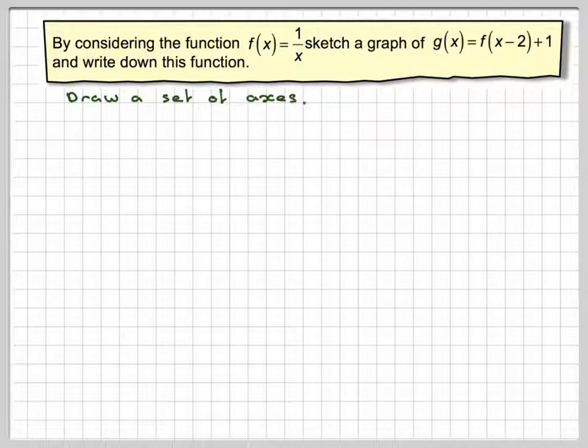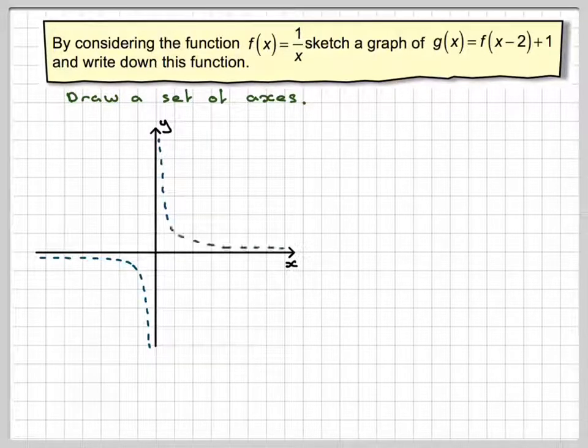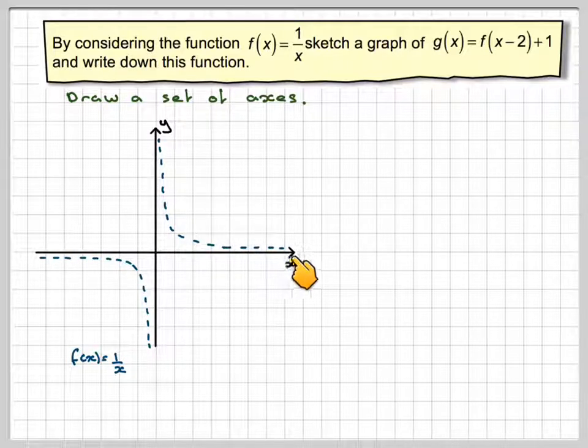Okay, so draw a set of axes, and then draw y is equal to 1 over x. I'll draw it dotted because I'm going to use this to draw another one. We know it would go through the point 1, 1, because 1 divided by 1 is 1. So that's a good way of helping you to draw where it actually sort of turns around. We know that the y-axis here is a vertical asymptote, and the x-axis here is a horizontal asymptote.